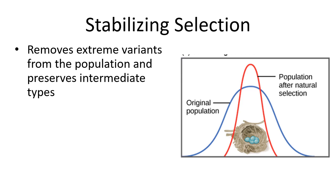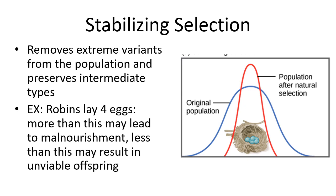Stabilizing selection is selection against the extremes, toward an intermediate norm. An example is robins — they lay four eggs. If they lay more than that, the chicks are undernourished; if they lay fewer, you get fewer viable offspring. So the intermediate number is selected for.